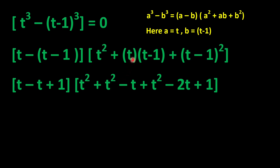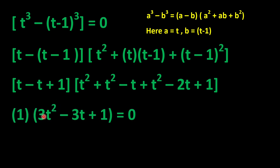Expanding the second factor: t^2, then t times (t-1) gives t^2 - t, and (t-1)^2 = t^2 - 2t + 1. Combining: t^2 + t^2 - t + t^2 - 2t + 1 = 3t^2 - 3t + 1. So the equation becomes 1 × (3t^2 - 3t + 1) = 0.